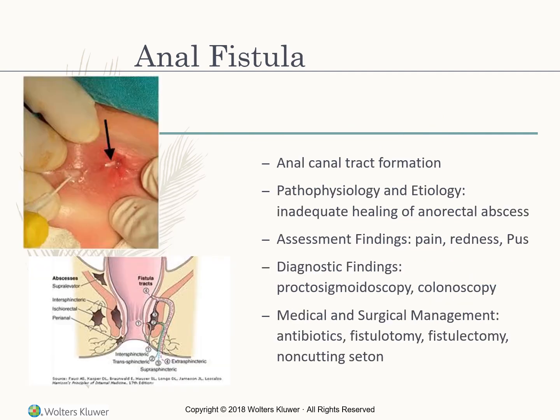An anal fistula is an anal canal tract formation caused by inadequate healing of an anorectal abscess. Assessment findings include pain, redness, and pus. Diagnostics include proctosigmoidoscopy and colonoscopy. Management includes antibiotics, fistulotomy, fistulectomy, and a non-cutting seton — a suture or drain placed through the fistula opening into the anal canal lumen and tied to itself to drain.